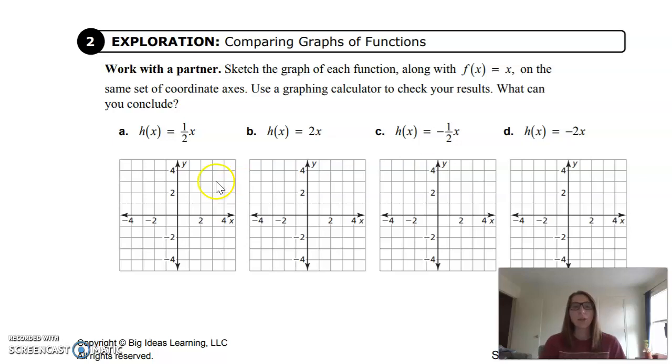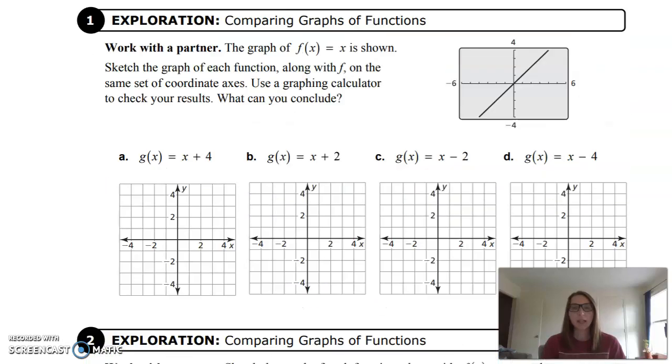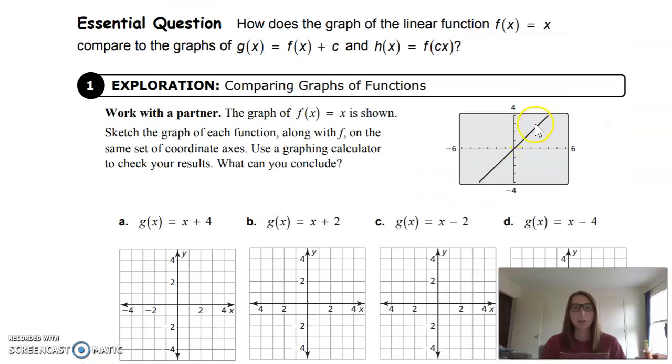So here we are using the same graph f(x) = x, and we will show that on our Desmos calculator in a moment. If you go to the top of the page, it's the same graph that is here, that f(x) = x. It creates a positive slope going through the point of origin.